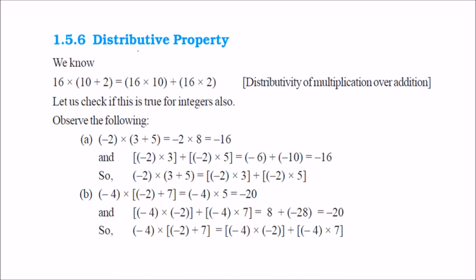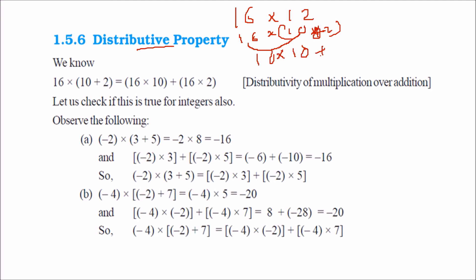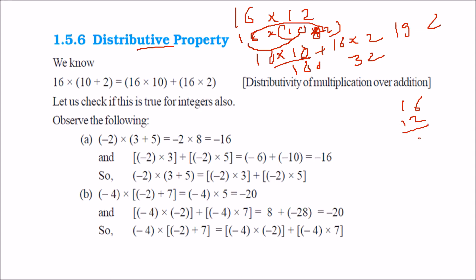Distributive property — this is a very important property. Suppose I have 16 and I want to multiply it with 12. I write 12 as 10 plus 2. By distribution, I multiply 16 with 10, getting 160, then multiply 16 with 2, getting 32. The result is 192. If I multiply 16 into 12 directly, I also get 192. So in both cases, distributive property holds for integers.